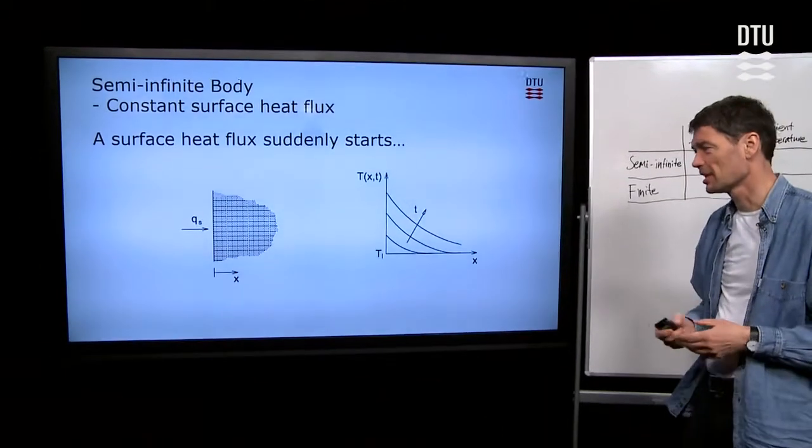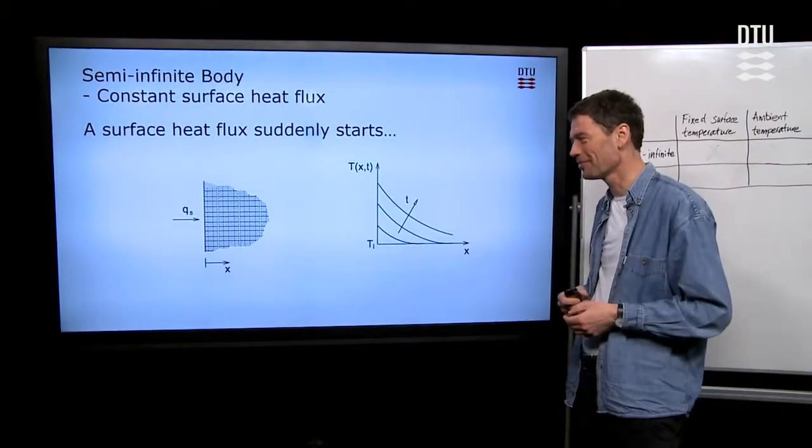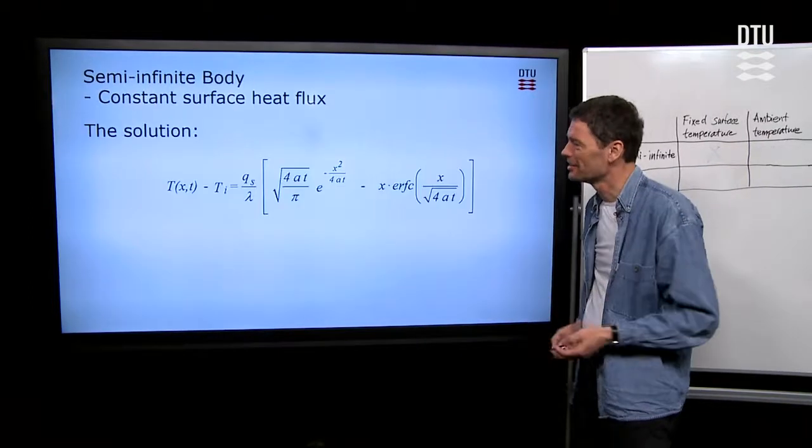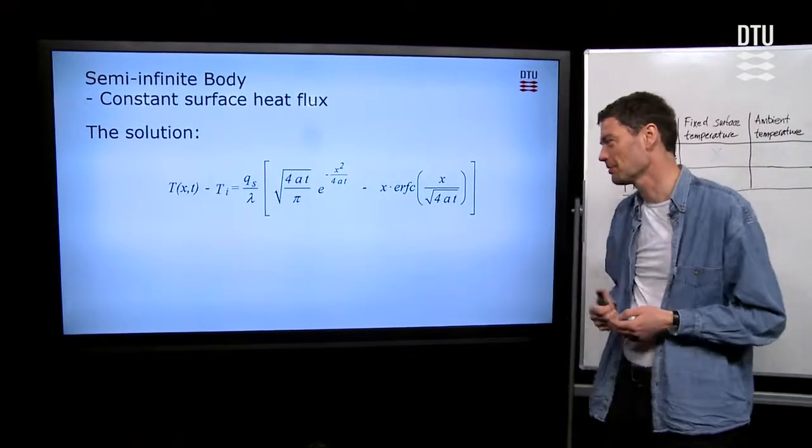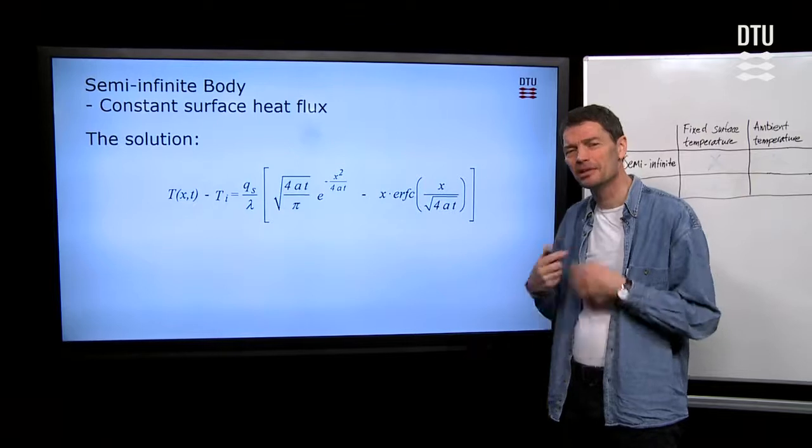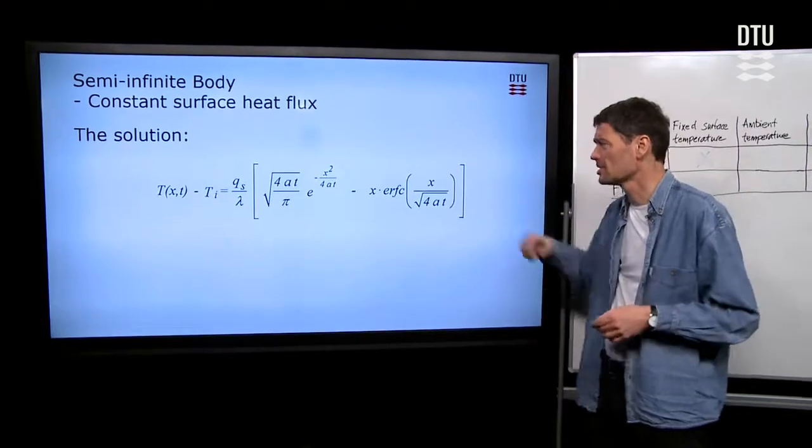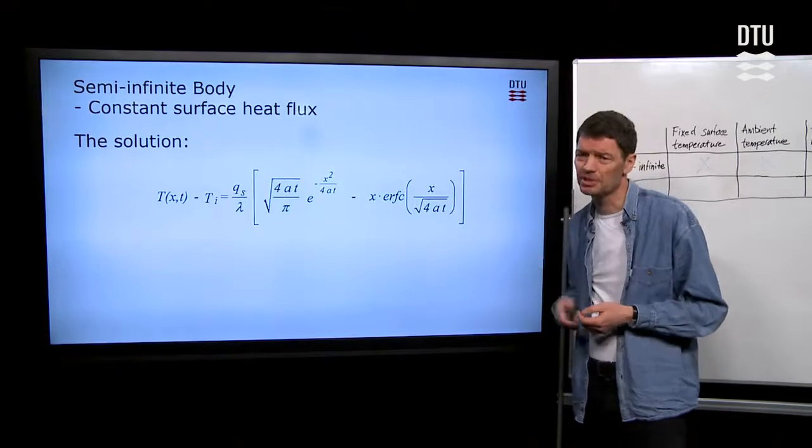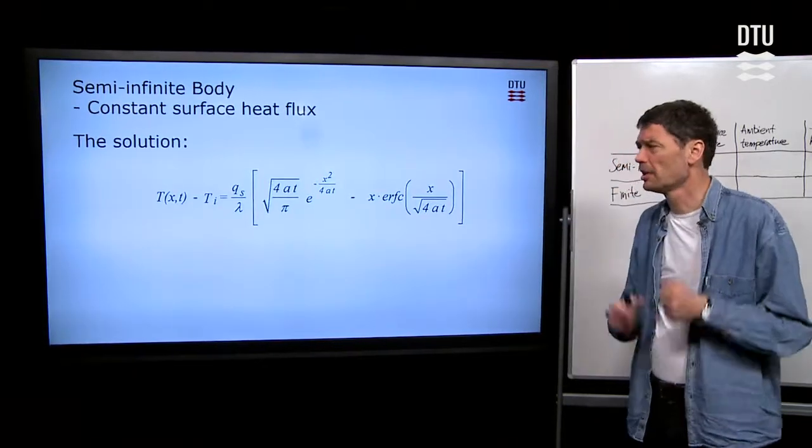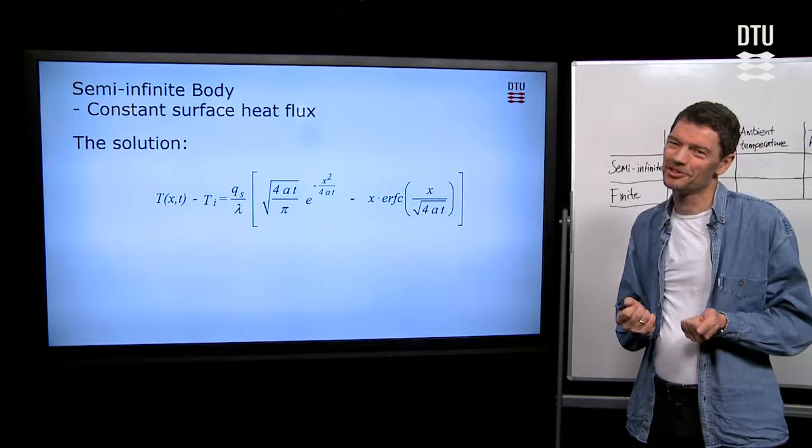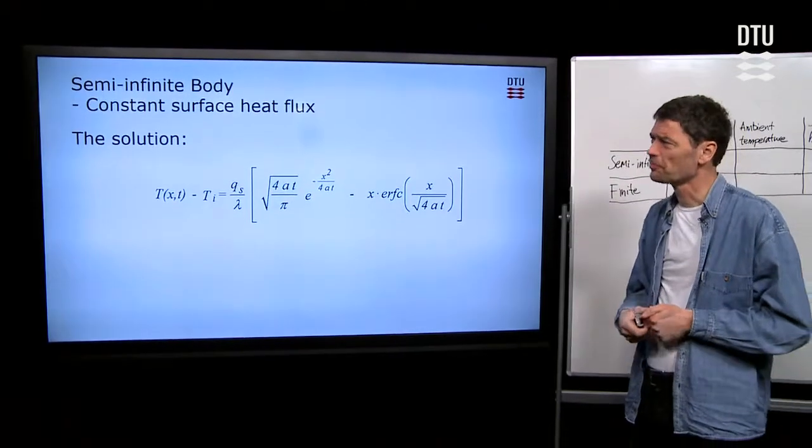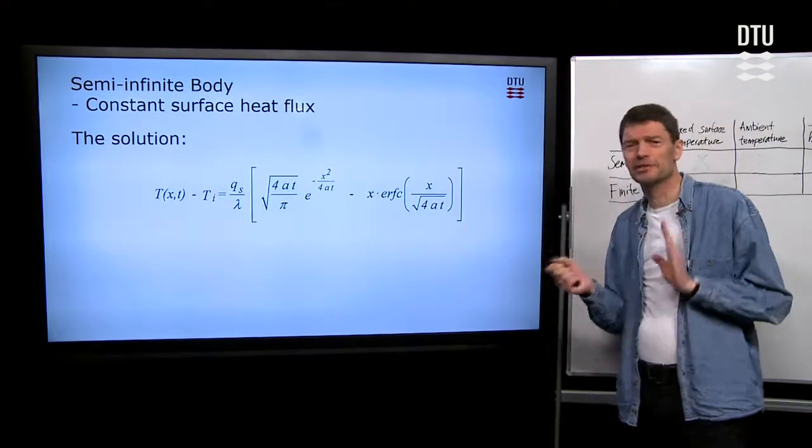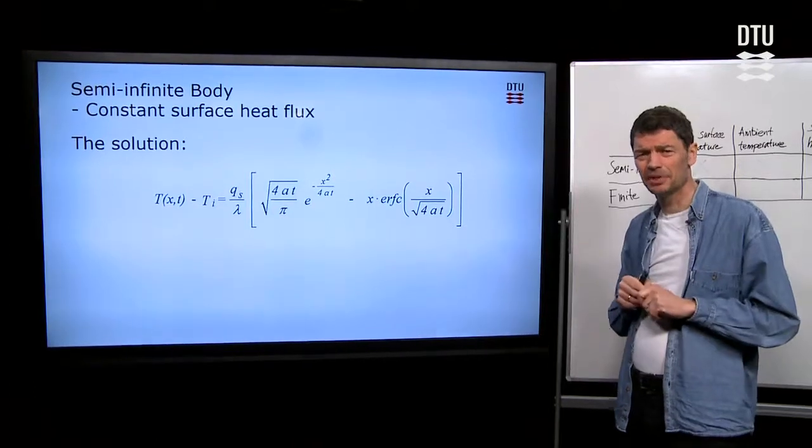For that case, then, we have a formula that tells us, again, temperature profiles in our material. And here is the formula, rather simple formula, but again, you're going to use the complementary error function. But inserting to find arguments, you have to insert the location x and the time t again. That's possible. The trick is only to identify the right case that you are dealing with.